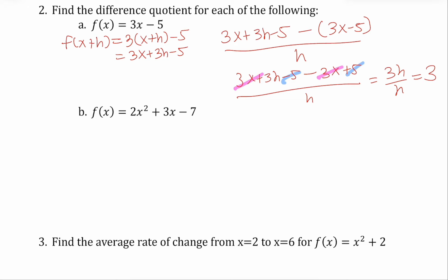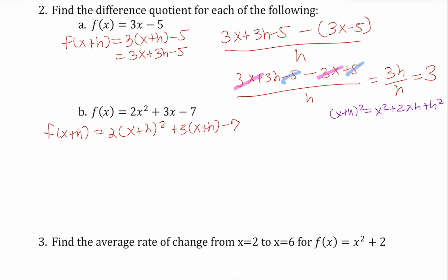So that's the linear one — not too arduous a process. Now let's look at the difference quotient for a quadratic. f of x plus h is two times the quantity x plus h squared, plus three times the quantity x plus h, minus seven. Remember that x plus h squared is x squared plus two x h plus h squared — you have to know that by heart, or be able to calculate it by doing x plus h times x plus h.